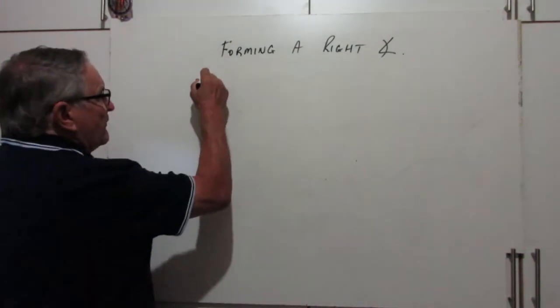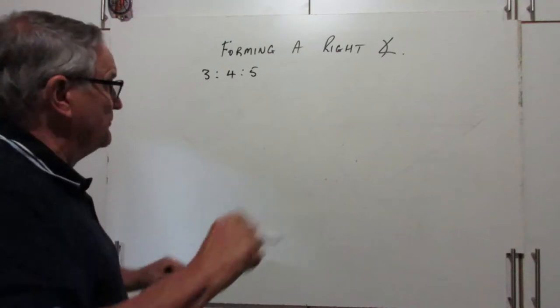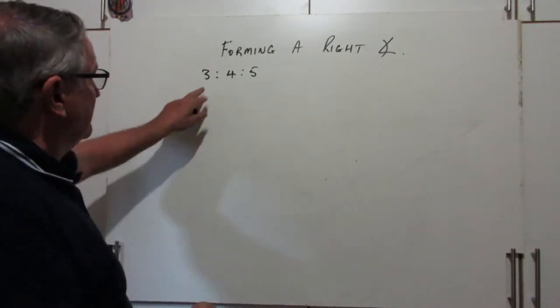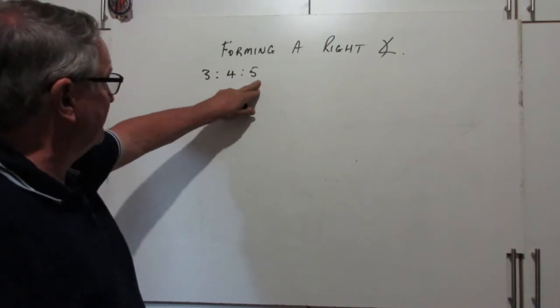We know about the 3-4-5 triangle as forming a 90 degree triangle. But you may not have space to have 4 meters and 5 meters.